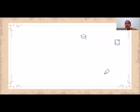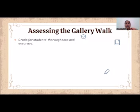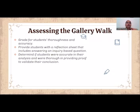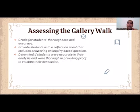Assessing the gallery walk — you can also use this strategy to assess your students. You can always grade through their thoroughness and accuracy, and you can provide students with a reflection sheet that includes answering an inquiry-based question, where you will have evidence of how the students have written, what they have understood, what their perspective is, and what critical analysis they have done. You can determine if the students were accurate in their analysis and whether they have provided thorough proof and conclusions. You can also provide them a rubric beforehand so that students are aware of the expectations after the gallery walk, which will be a great tool to assess.